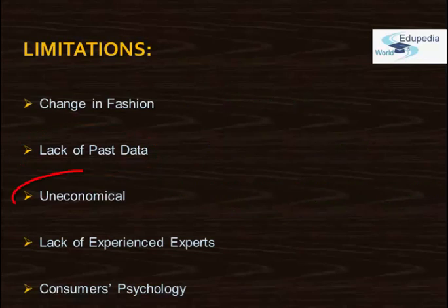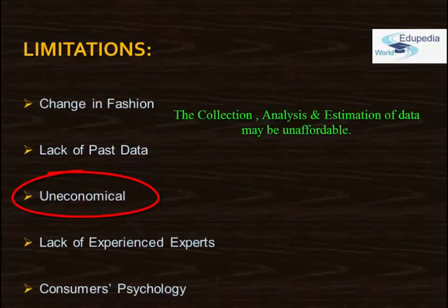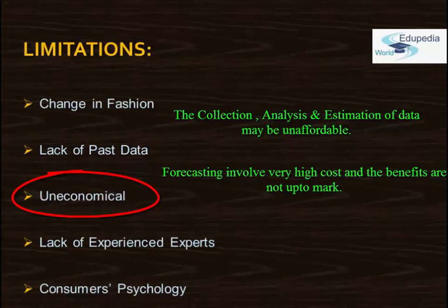Another limitation is that at times forecasting could be uneconomical. The collection and analysis of data about the past, present, and future, and the estimation involved, requires a lot of time and money which may not be affordable. Therefore, managers have to balance the cost of forecasting with its benefits. This is the reason that many small firms do not go for forecasting, because the cost is very high for them and the benefits are not equivalent to the cost involved.